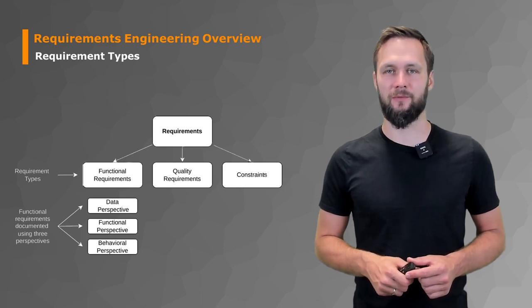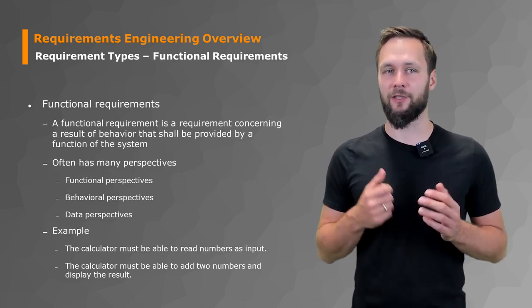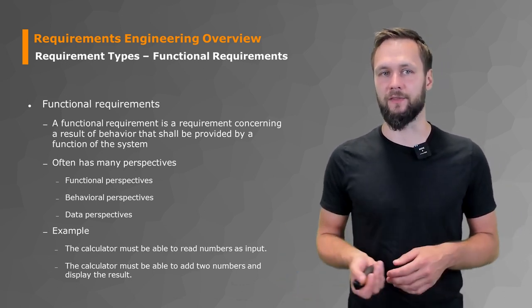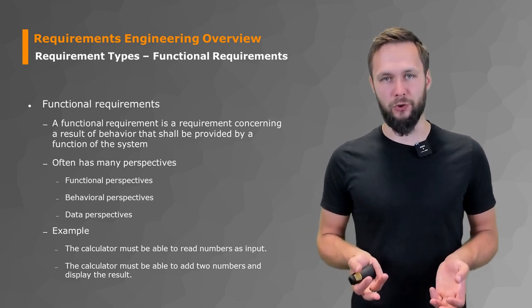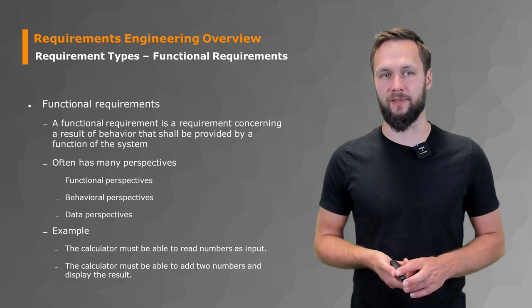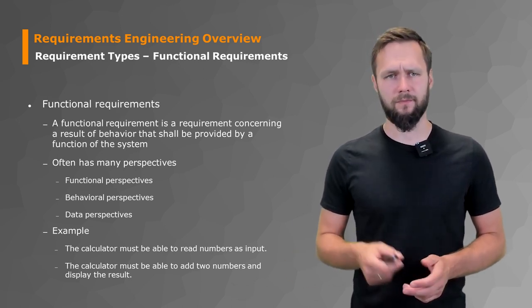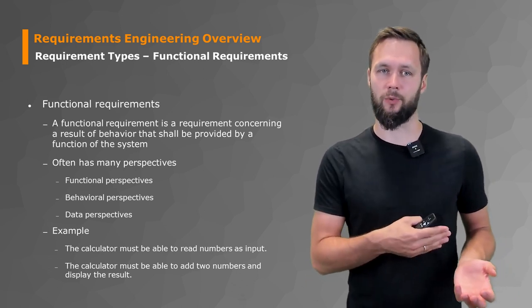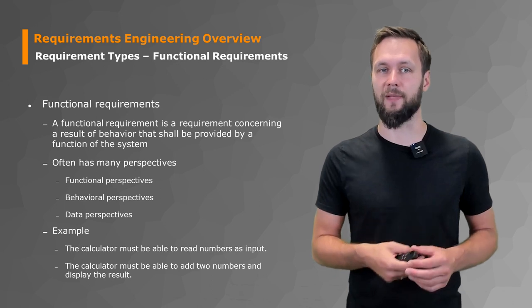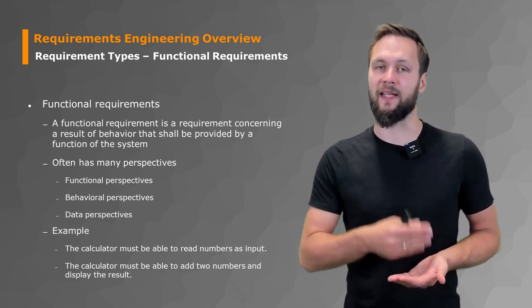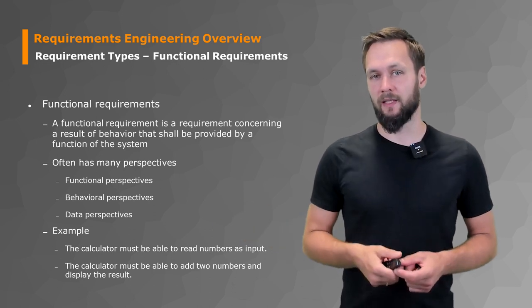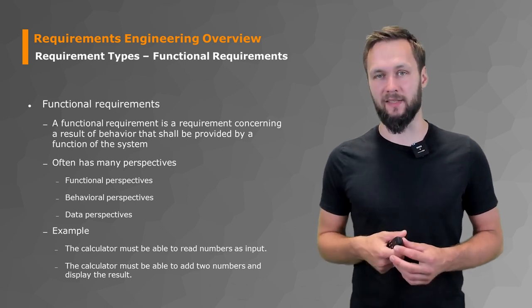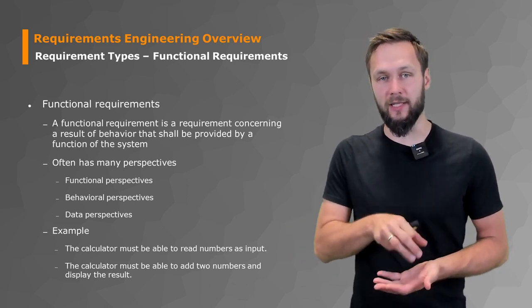Let's talk about functional requirements. A functional requirement is a requirement concerning the result of behavior that should be provided by a function of the system. In simple terms, what is it supposed to do? What functionalities do you want to have? There are these three perspectives that we'll discuss later in detail. An example, going back to our calculator: the calculator must be able to read numbers as input. This is something the calculator application is supposed to do. Second example: the calculator must be able to add two numbers and display the result. Also something it has to do - it's a functionality it has to provide.